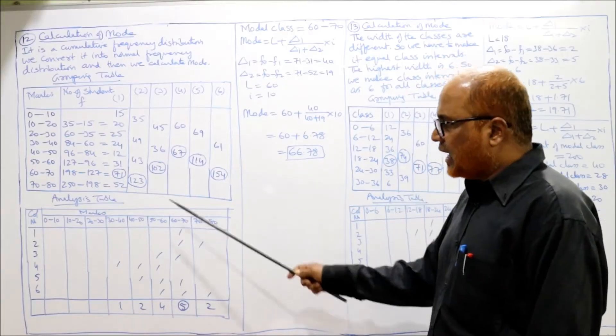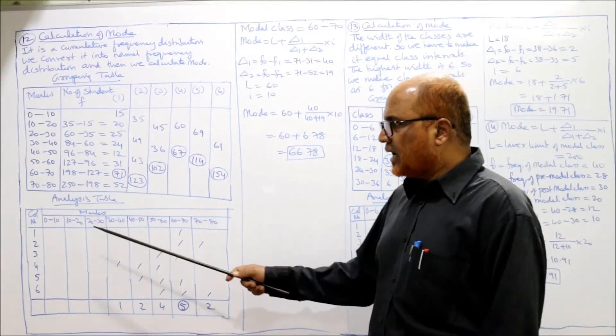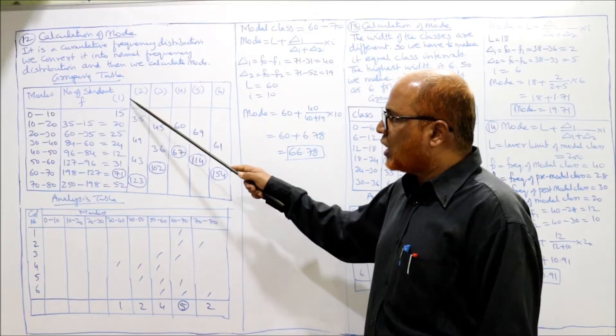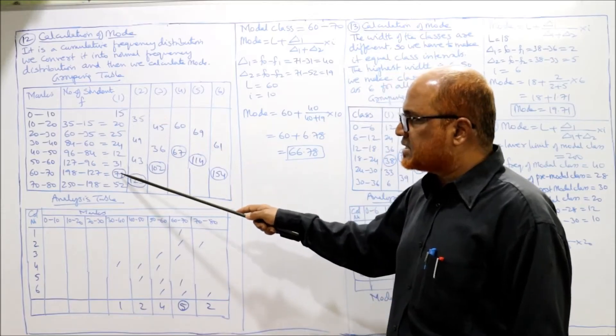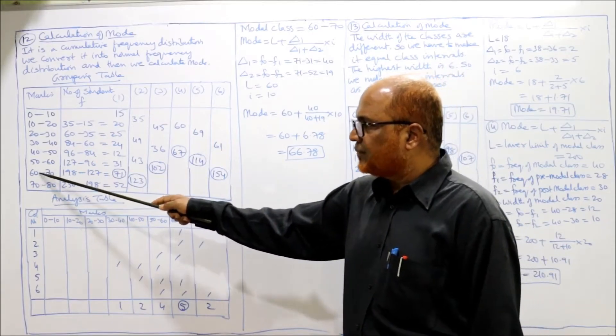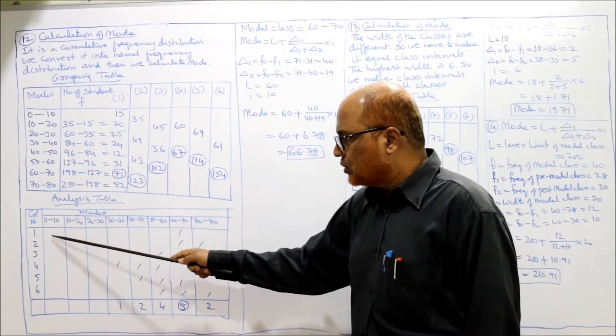Now the analysis table. First column: highest is 71 — against class 60 to 70.